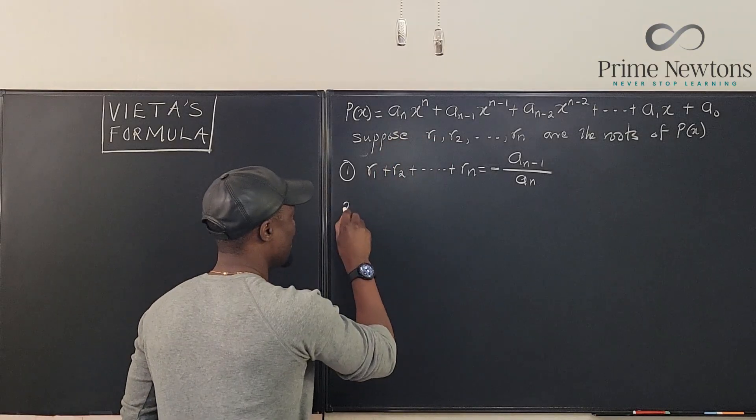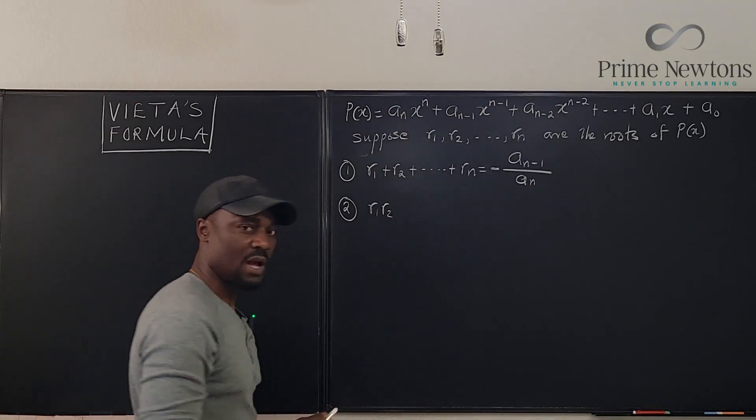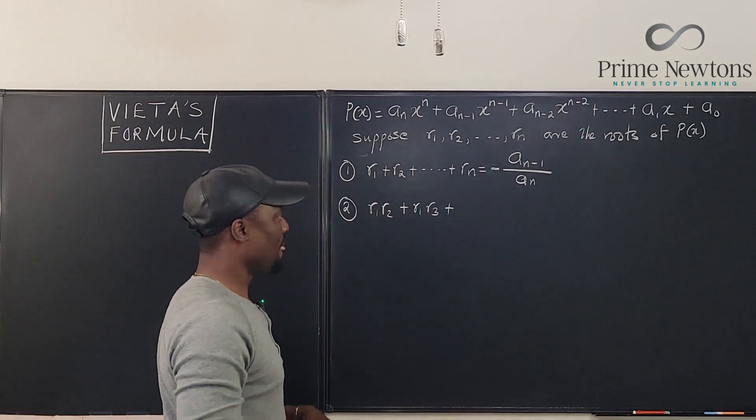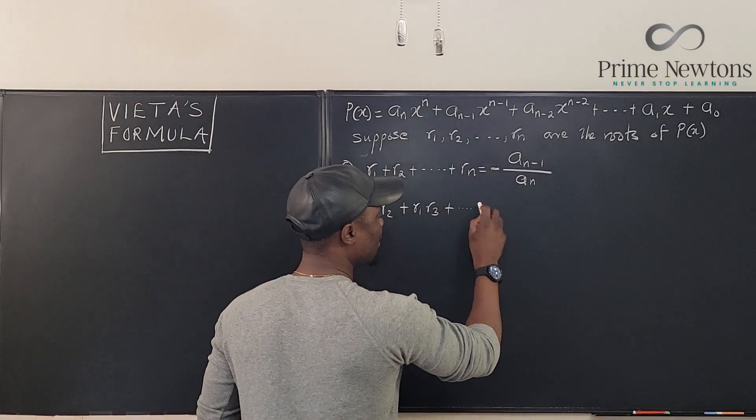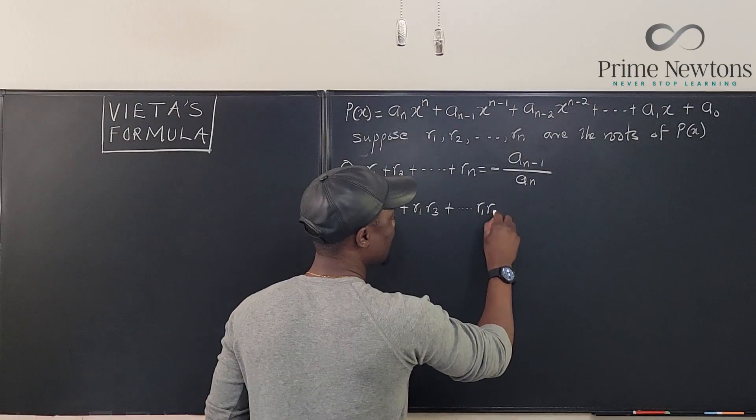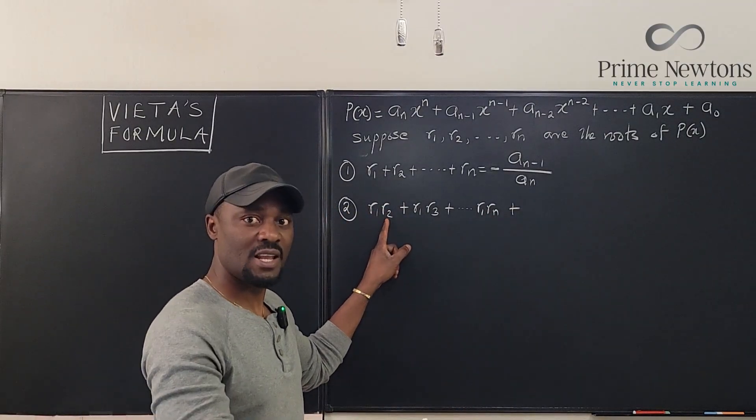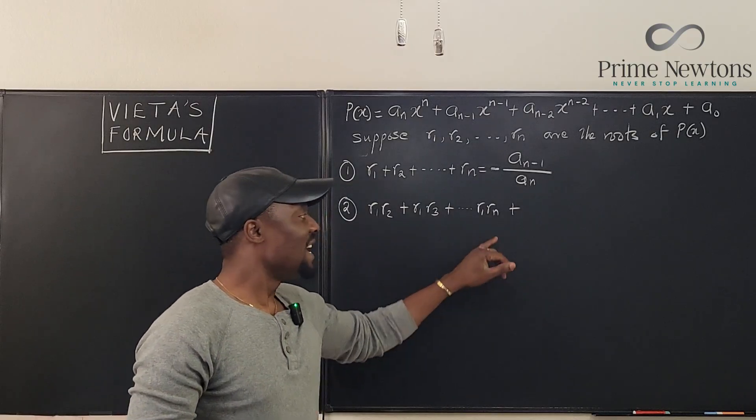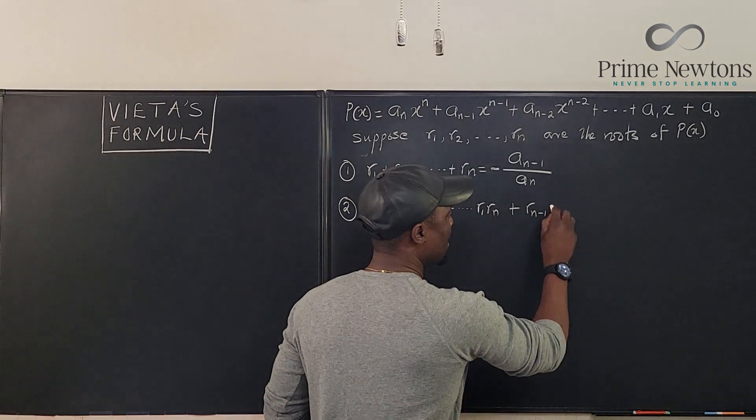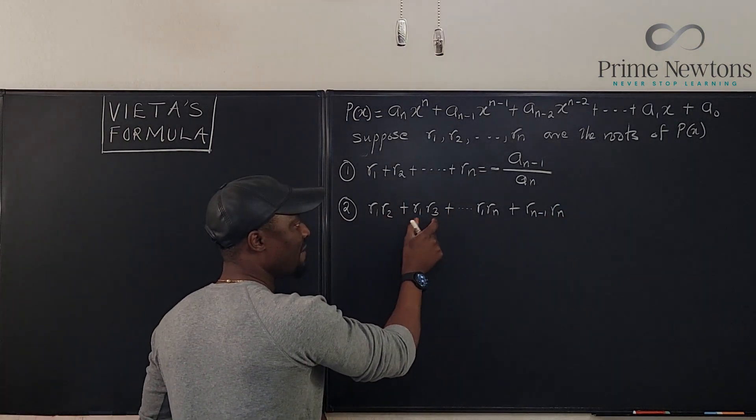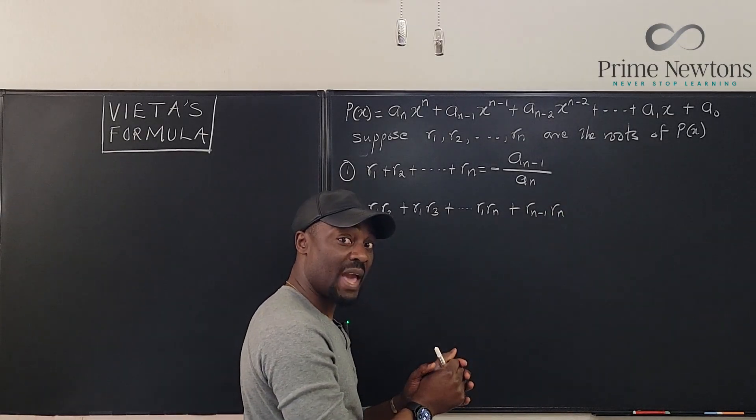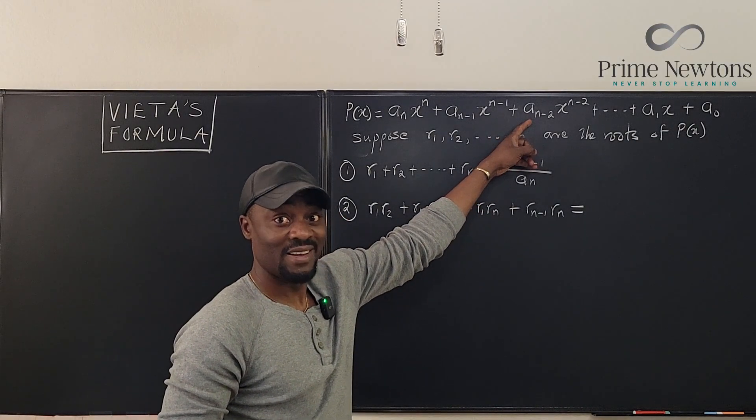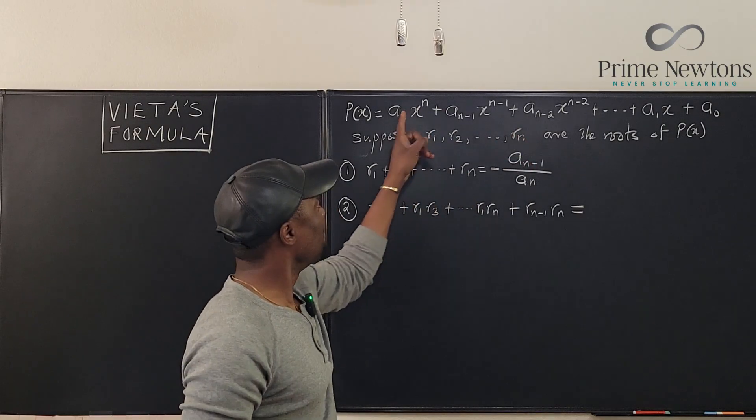Let's do something more interesting. Let's do another one. Let's say you do r1, r2. You multiply r1 by r2 and then you multiply r1 by r3 and then you add it. You keep going like that until you get to r1, rn. And then you're done with multiplying with r1. You switch to r2, r3, r2, r4, r2, r5 until you get to r2, rn. Then you switch to r3. You keep going like that until you get to the last one, say rn minus 1, rn.